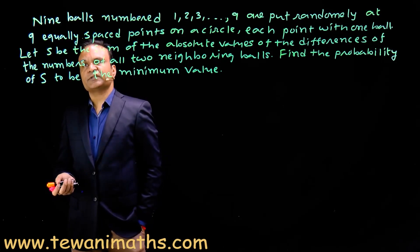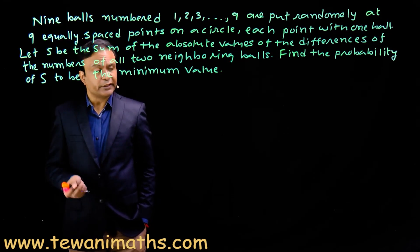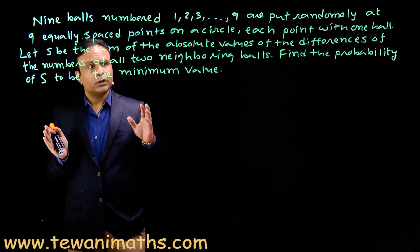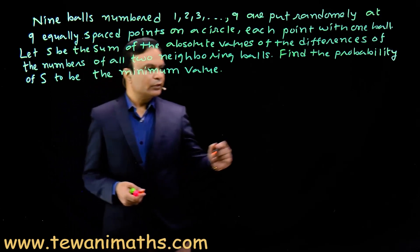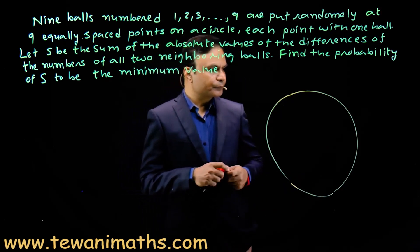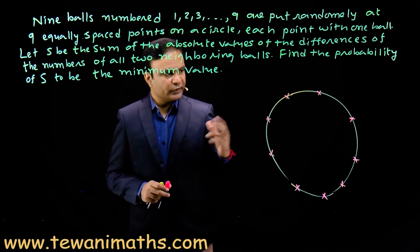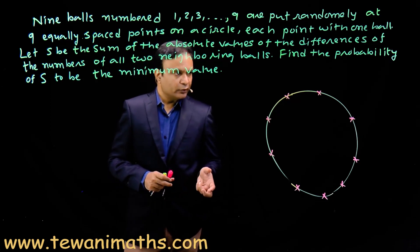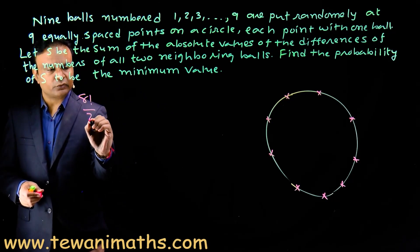The next question is from permutation combination. Nine balls numbered 1 to 9 are put randomly at 9 equally spaced points on a circle, each point with 1 ball. Let S be the sum of the absolute values of the differences of the numbers of all 2 neighboring balls. Find the probability that S is the minimum value. We have a circular arrangement of 9 different balls. Since clockwise and anticlockwise arrangements are indistinguishable, the total number of arrangements is 8!/2.